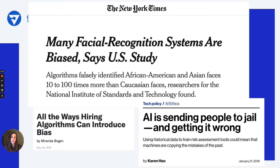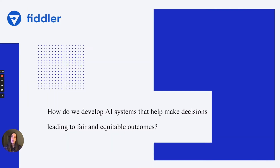As data scientists, we should use the guiding question: how do we develop AI systems that help make decisions leading to fair and equitable outcomes? This means making efforts to address bias in our machine learning pipeline.